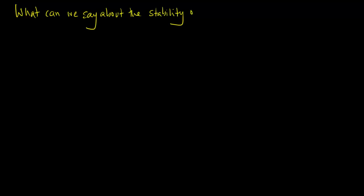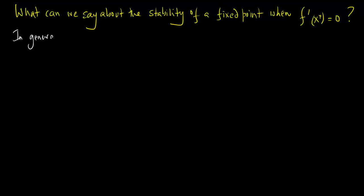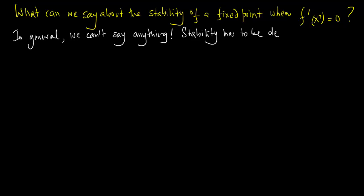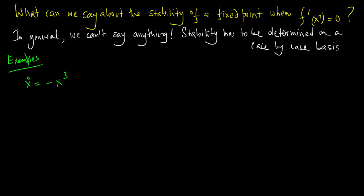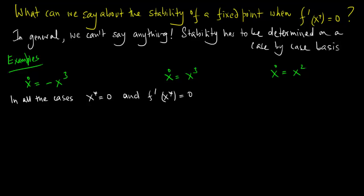What can we say about the stability of a fixed point when f′(x*) = 0? In general we cannot say anything — stability must be worked out on a case-by-case basis. Consider three examples: x_dot = −x³, x_dot = x³, and x_dot = x². In all cases x* = 0 and f′(x*) = 0.